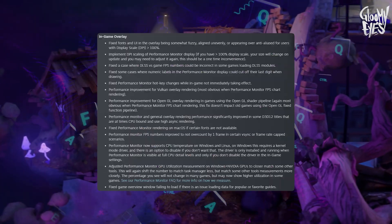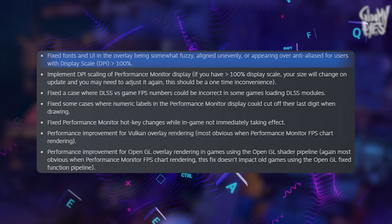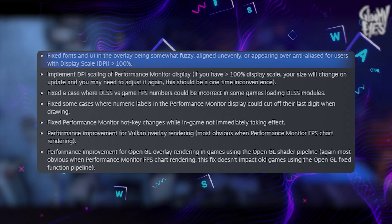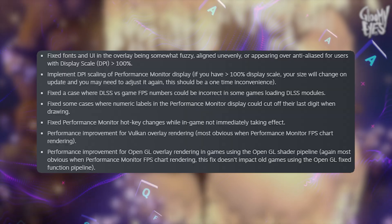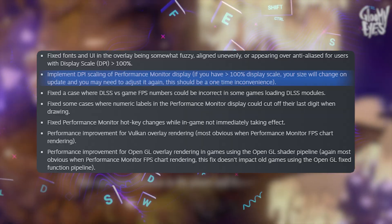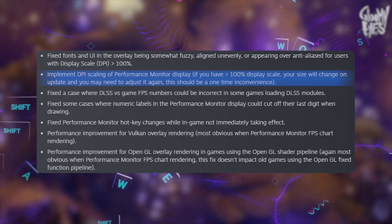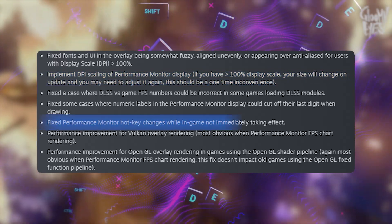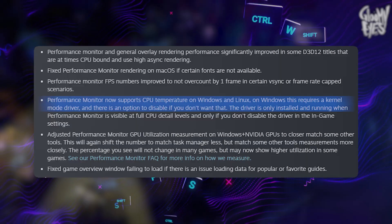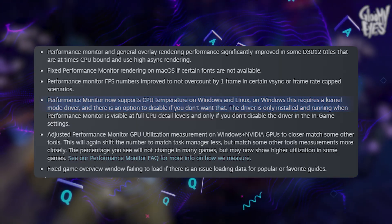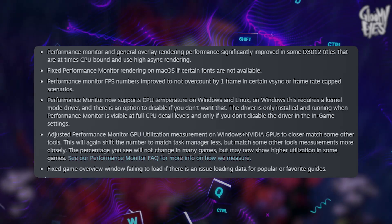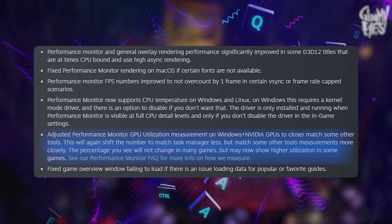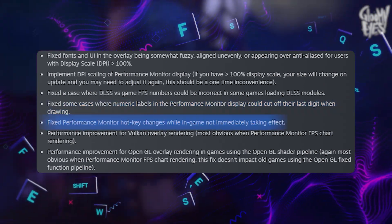The in-game overlay got a big deal of attention. If you've noticed fuzzy fonts or misaligned performance stats when running your games, that's been fixed. They've also improved how the overlay handles high DPI displays, so if you run your system above 100% scale, everything should finally look crisp and properly aligned. The performance monitor got a big update too — CPU temperatures can now be displayed on Windows and Linux, with the kernel driver handling the details, and GPU utilization numbers on NVIDIA cards are now more accurate. They also fixed smaller annoyances like numeric labels cutting off.